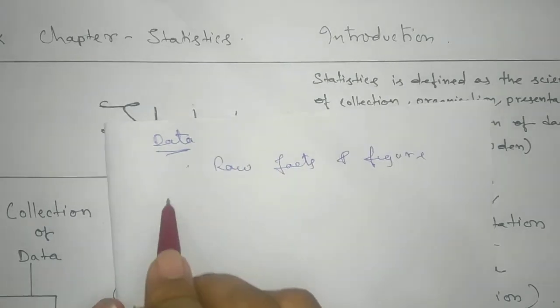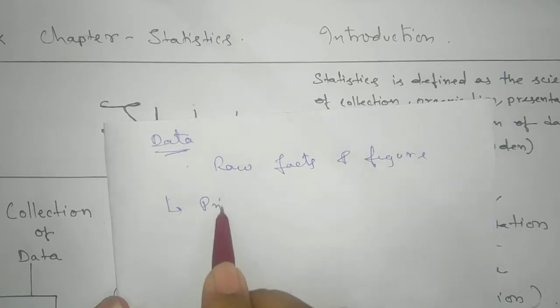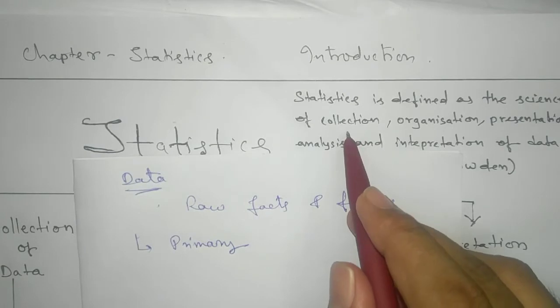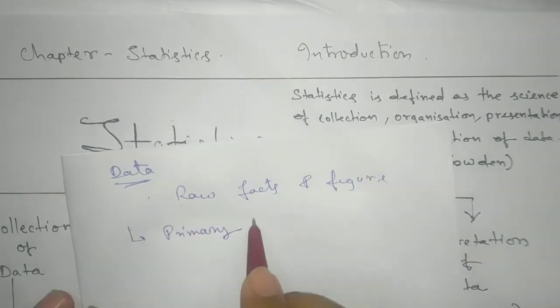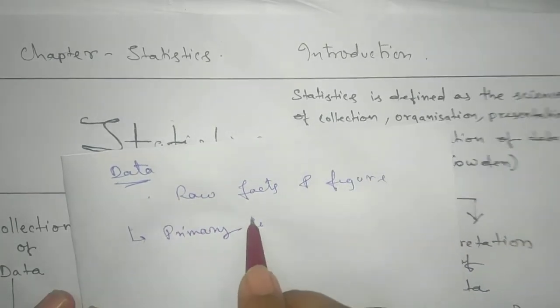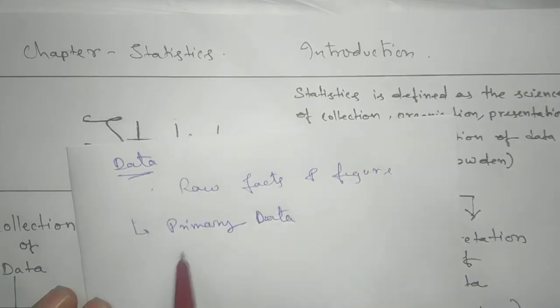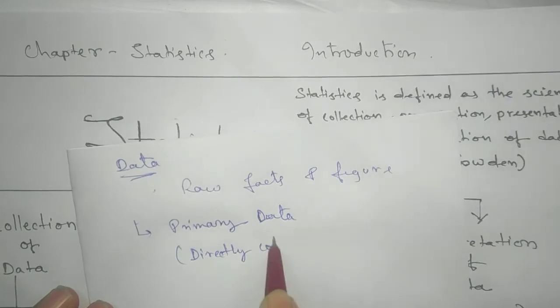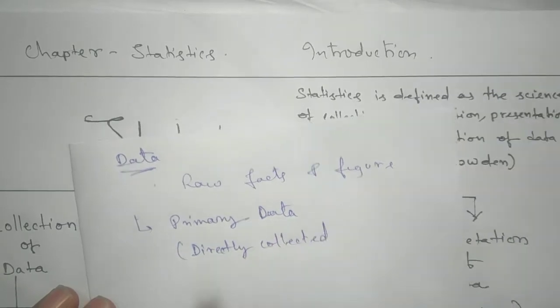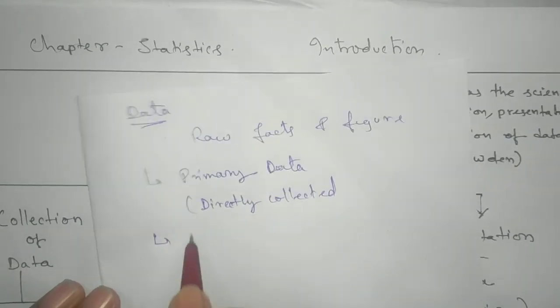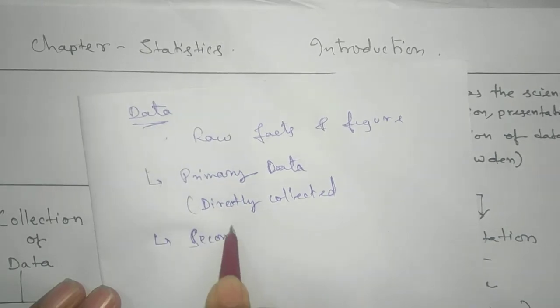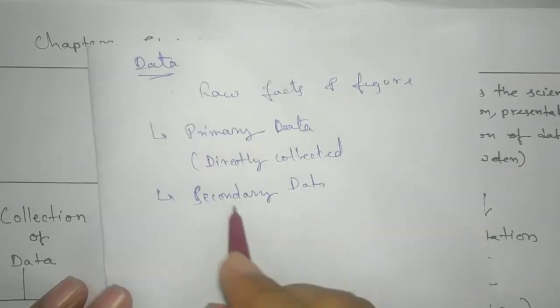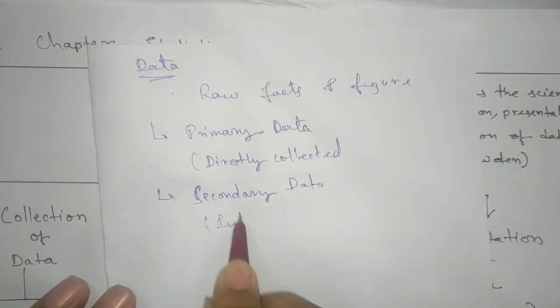Now this data can be collected in two ways. One is primary data. That is collection of data. First step is our collection of data. And this can be collected two ways. One is primary data. That means directly collected. We will see. Another is secondary data.